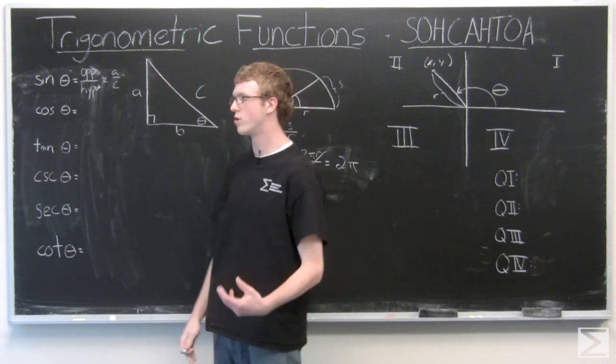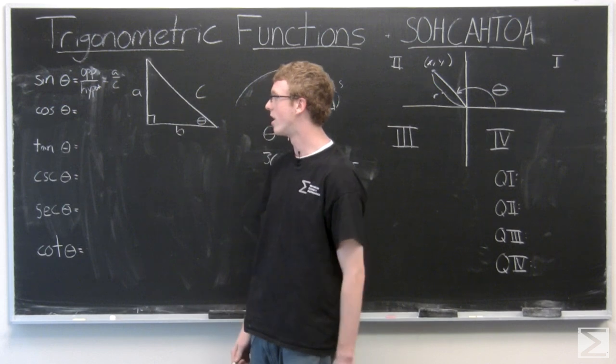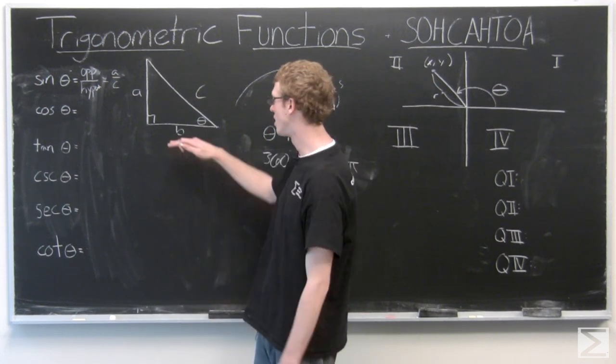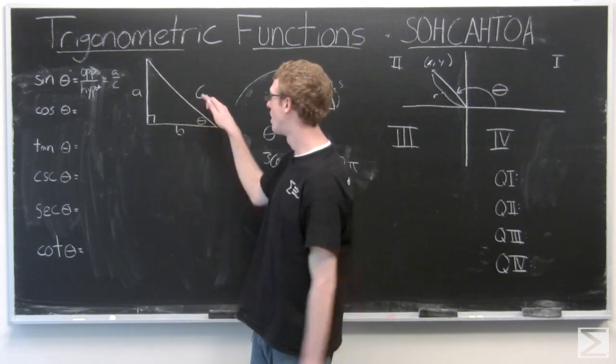Now we do the same thing with cosine, that's the C in SOHCAHTOA, and then the AH is adjacent over hypotenuse. So the adjacent side here is B, hypotenuse again is C.